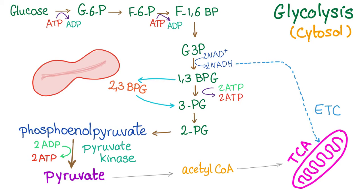Glucose-6-phosphate is converted to fructose-6-phosphate, then fructose-6-phosphate into fructose-1,6-bisphosphate. This is ATP to ADP because we need one phosphate, and the enzyme will have the word kinase in it — this is phosphofructokinase. Fructose-1,6-bisphosphate will be converted into glyceraldehyde-3-phosphate, then into 1,3-bisphosphoglycerate, 3-phosphoglycerate, and into 2-phosphoglycerate.